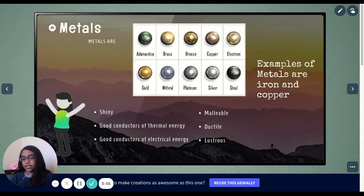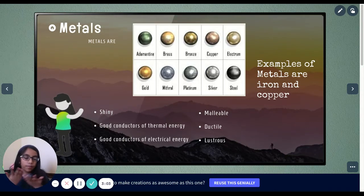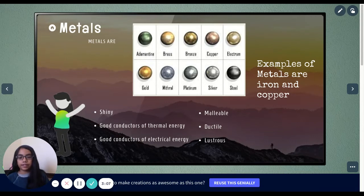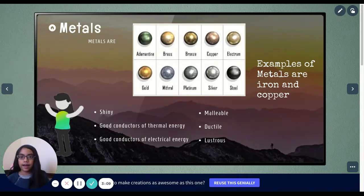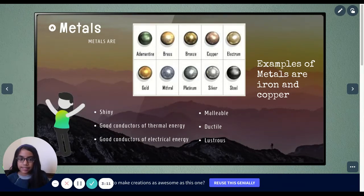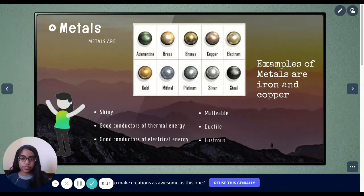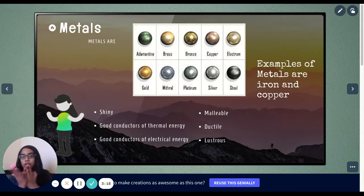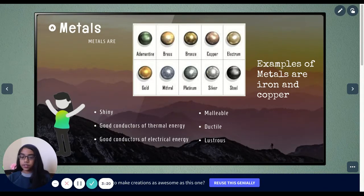Metals are shiny. Good conductors of thermal energy. Good conductors of electrical energy. Conductors are basically, it'll allow the energy to pass. They are malleable, ductile, and lustrous. Examples of metals are iron and copper, which you probably see most of the time.